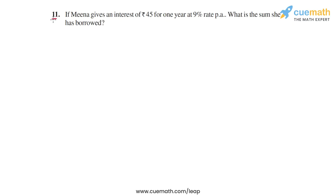In question 11 of this exercise, the problem statement says: if Meena gives an interest of rupees 45 for one year at 9% rate per annum, what is the sum she has borrowed?